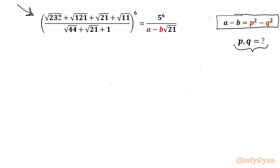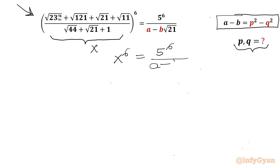Let's get started by considering this bracket only equal to x. So our equation becomes x to the power 6, equal to 5 to the power 6 divided by A minus B times square root of 21.